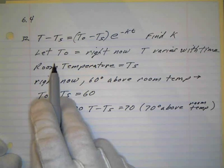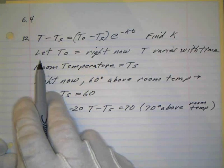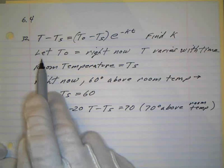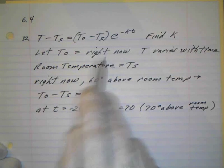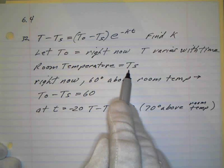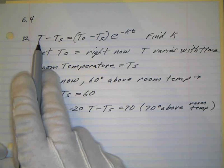So they don't really tell you what the temperature of the room is, but they tell you the relevant temperature and the way it works out, it fits into our formula real nicely. In other words, if we let T_0 equal the temperature right now and the room temperature is T_s and T, which is the temperature at any time, that varies with time. That's the T in our formula over here.